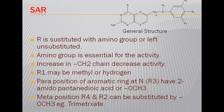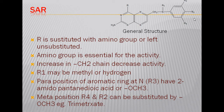In the general structure of folic acid analogues, R is substituted with an amino group or left unsubstituted — the amino group is important for activity. Increasing the length of the CH2 chain decreases activity. R1 may be methyl (methotrexate) or hydrogen (aminopterin). The para position of the aromatic ring carries the 2-aminopentanedioic acid in methotrexate, but this can also be replaced with methoxy groups at meta and para positions (R2, R3, R4) to give trimetrexate.